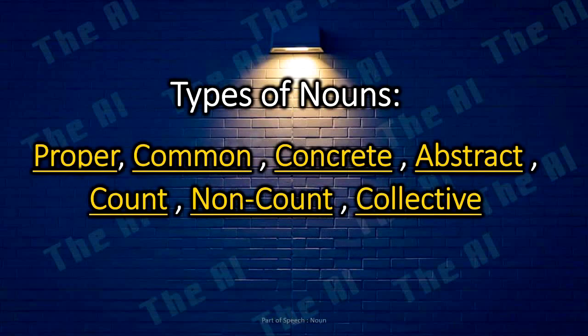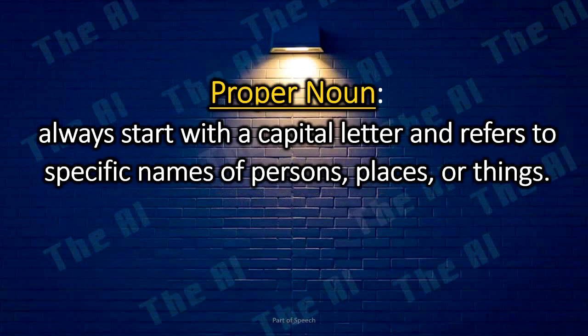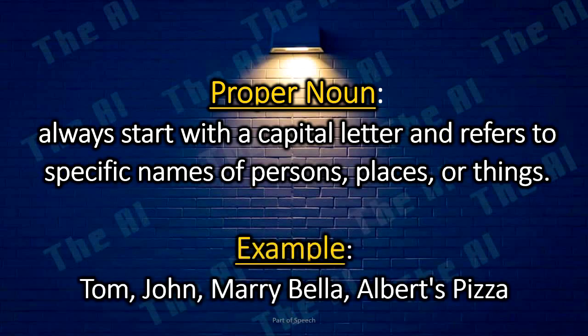There are different types of nouns: proper, common, concrete, abstract, count, non-count, and collective. Proper nouns always start with a capital letter and refer to specific names of persons, places, or things. Examples: Tom, John, Mary Bella, Albert's Pizza.